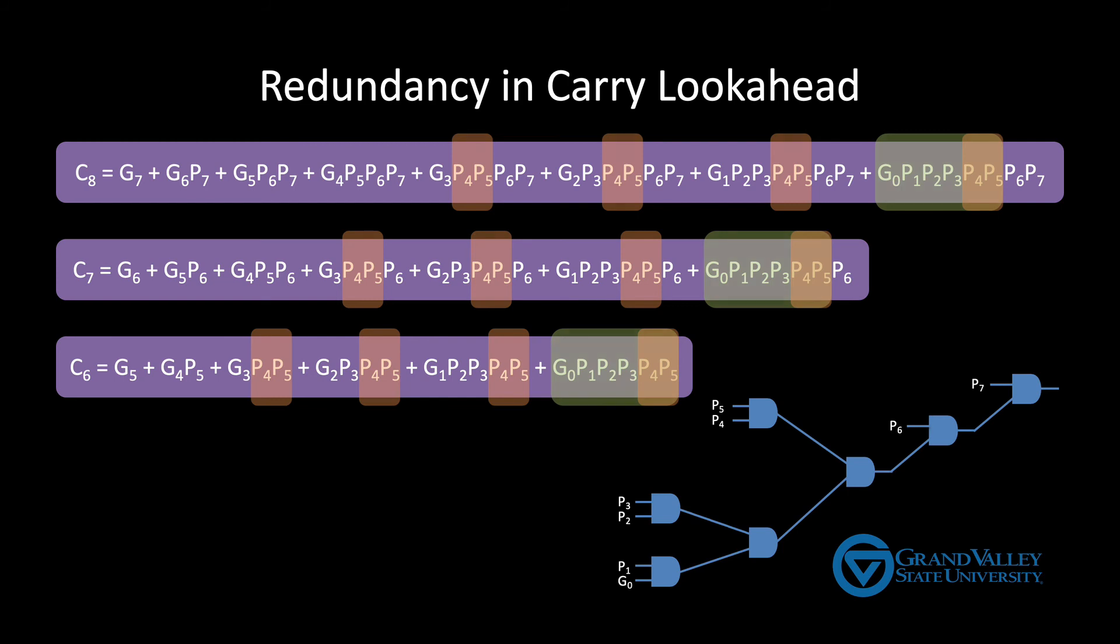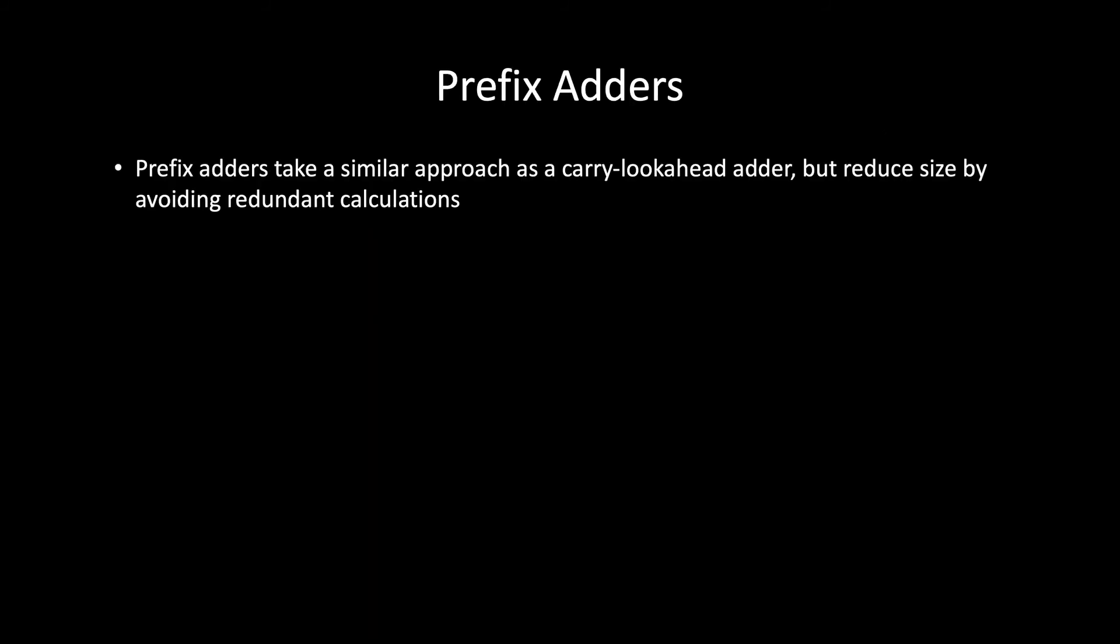There's an entire class of adders called prefix adders that identify and leverage this redundancy in a way that keeps the growth rate of the propagation delay to log n. One of the best-known prefix adders is called the Cogstone adder. Other prefix adders include the Brent-Kung adder, the Han Carlson adder, and the Lynch-Schwarzlander spanning tree adder. A thorough discussion of prefix adders would require an entire video, so I'll save that discussion for later.